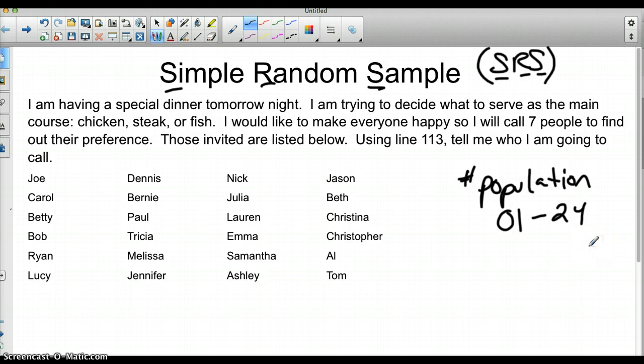Now we number our people. If your people are listed in alphabetical order, you can just number them going down in alphabetical order, or however they're listed. I have Joe as first, so I'm going to do Joe as 01. Carol is 02, Betty is 03, Bob is 04, Ryan is 05, and Lucy as 06. I could have done Joe 01, Dennis 02, Nick 03, Jason 04, but I chose to go down because I prefer to do that. We need to finish numbering all of them.